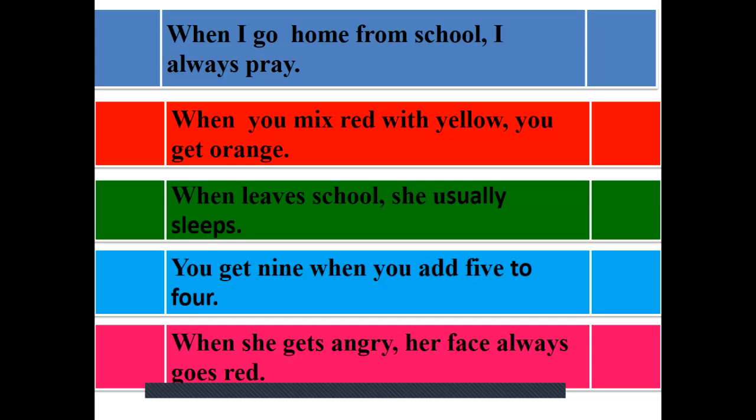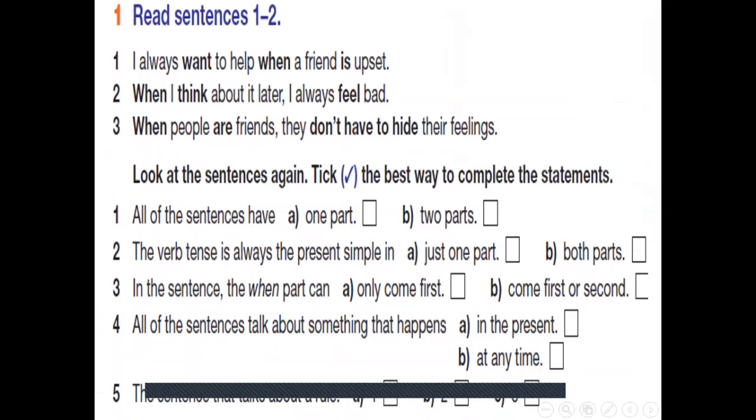Examples on page 66. Let's read the examples. I always want to help when a friend is upset. Always. I always like to help when one of my friends is upset. I always help. Notice that 'want', I always want. This is present simple. We use present simple because 'I' takes a verb in present without S. When a friend is upset. Number two. When I think about it later, I always feel bad. Same thing. When I think, this is present simple. Because 'I' doesn't take S. I always feel. Because something happens all the time. Always constant. Happens at any time. Always. Repeated habits.